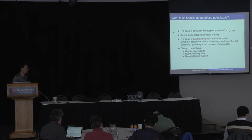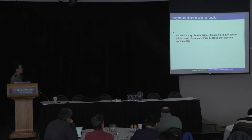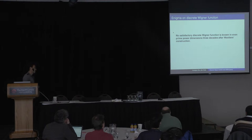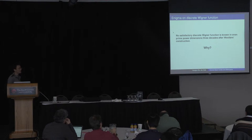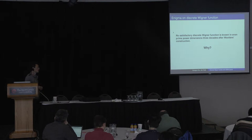How about even prime-power dimensions? This is a long-standing open problem. For over 30 years, still no satisfactory discrete Wigner function has been constructed in even prime-power dimensions. So why? Maybe there is a fundamental obstruction, or maybe we are just not clever enough to construct a good Wigner function. In this talk I will answer this question and make a connection with unitary design, connecting discrete phase space with a ubiquitous tool in quantum information science.